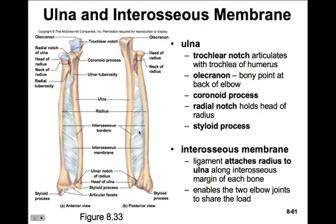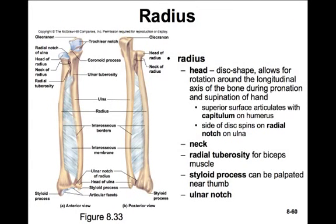Between these two bones is an interosseous membrane that holds them together and allows the rotation of the radius. It also allows the elbow joints to share the load when lifting. Stop and add to your outline — you've got two more bones to add with each of their features. Remember, you're only responsible for the terms in bold on each slide, which match the bold terms in your textbook.